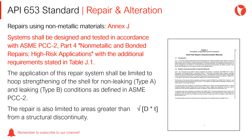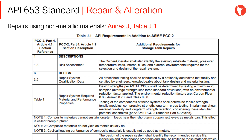The application of this repair system shall be limited to hoop strengthening of the shell for the non-leaking type A and leaking type B conditions as defined in ASME PCC-2. The requirements shown on Table J1 of Annex J should be added to those indicated in ASME PCC-2 in order to perform a repair with non-metallic materials.